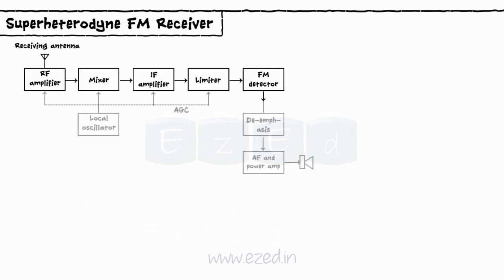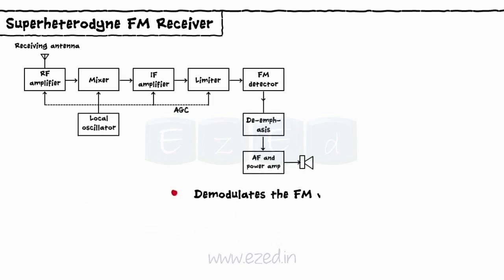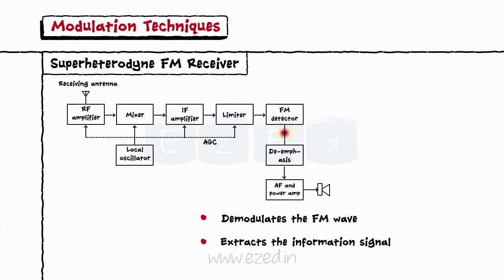FM detector: The FM detector demodulates the FM wave and extracts the information signal, passing it via a power amplifier. It is then amplified and sent to the loudspeaker.